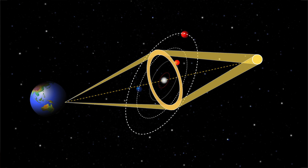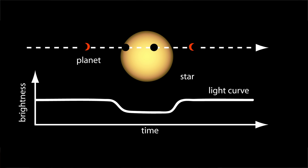Thanks to a planet-hunting technique called gravitational microlensing, which is really sensitive to cold, distant exoplanets, we've determined that every star on average has one cold planet. Looking at another technique called transits, which looks at close-in warm planets around their star, we find on average one warm planet per star. The way this averaging works is that some stars may have no planets and others may be chock-full of them, but the average comes out to one warm one and one cold one — giving us two exoplanets per star, on average.